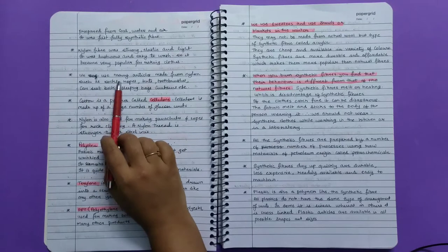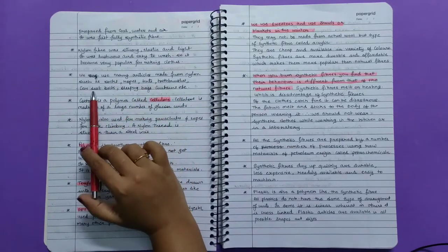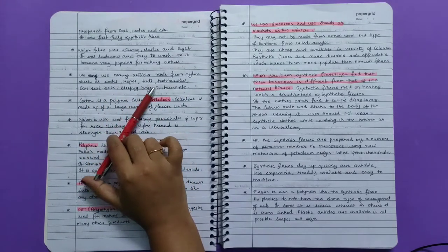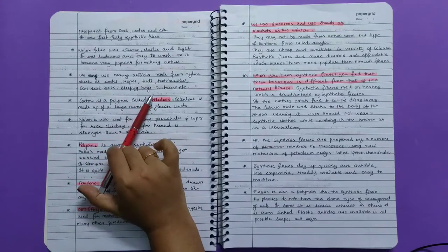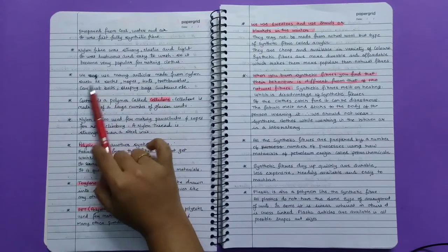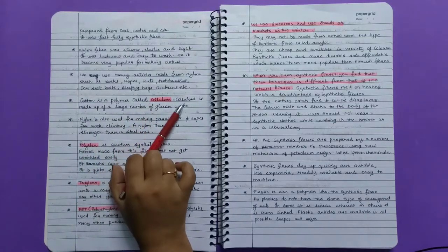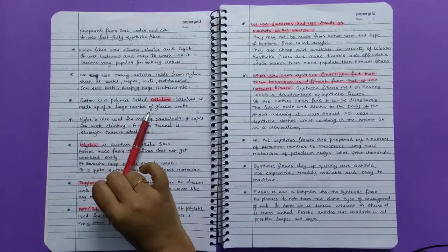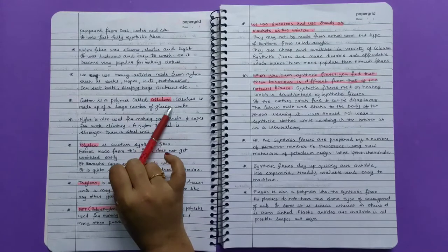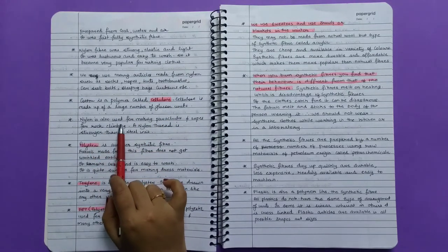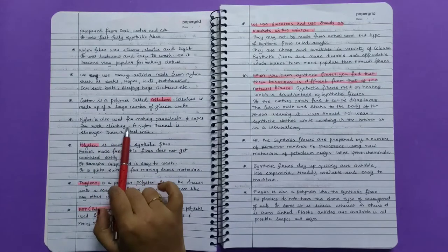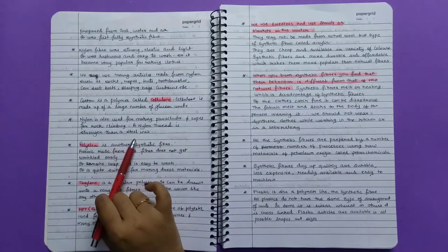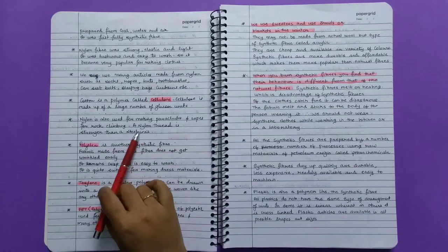We use many articles made from nylon such as socks, ropes, tents, toothbrushes, car seat belts, and sleeping bags. Cotton is a polymer called cellulose. Cellulose is made up of a large number of glucose units. Nylon is also used for making parachutes and ropes for rock climbing. A nylon thread is stronger than a steel wire.